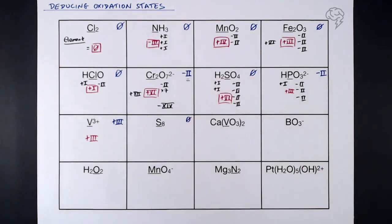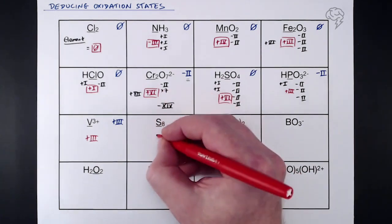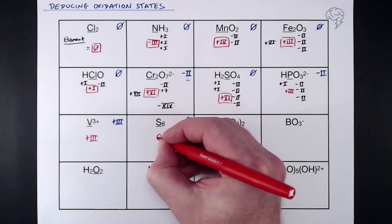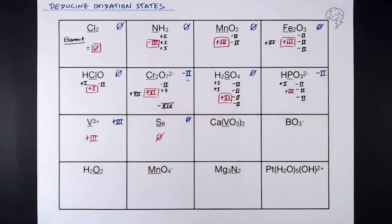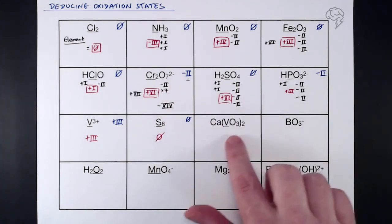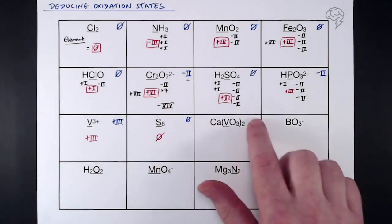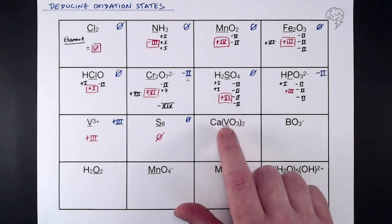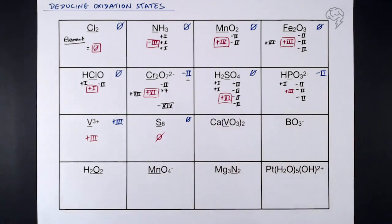Sulfur, S₈: the overall oxidation state is zero. There might be a molecule here — S₈ — but it's still just an element, so the oxidation state of sulfur is zero.